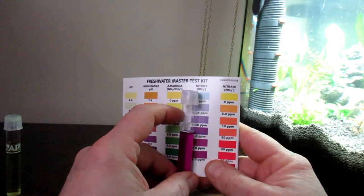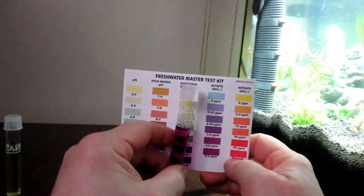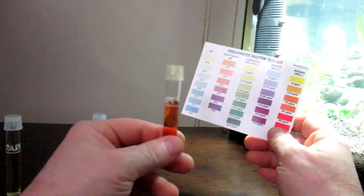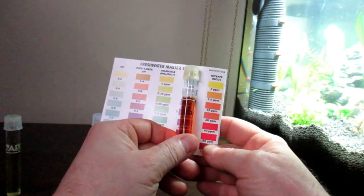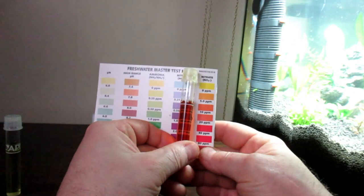The next one I want to see is make sure the nitrate is also happening, so that means the two types of bacteria. And here we are. Now this is roughly 40, so I need to do a water change on this.